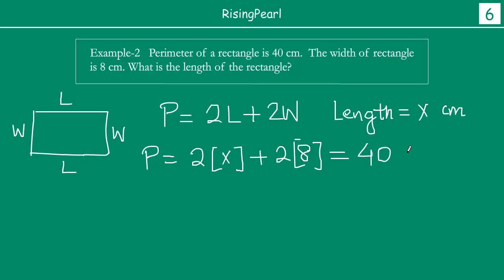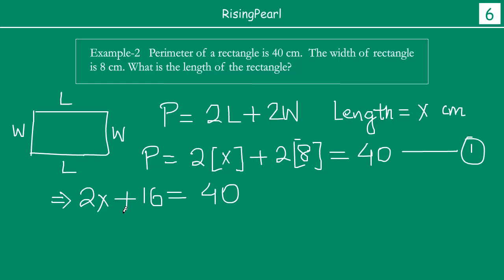So now what we will do — this equation we are going to solve. Let us call it equation 1. If you solve this, you get 2x plus 16 is equal to 40. Now, subtracting both sides by 16, or transposing 16 from this side to the other side.